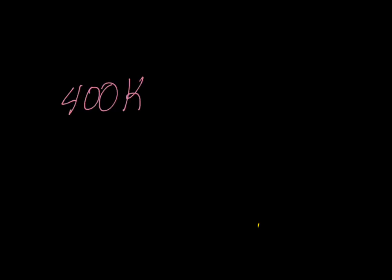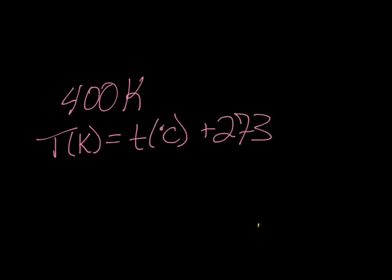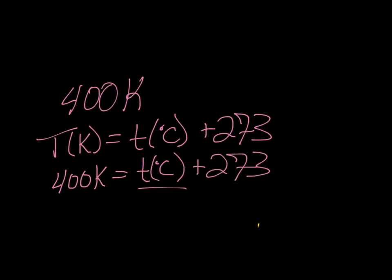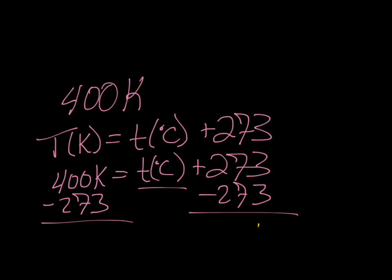The other way is if I gave you a temperature in Kelvin, like 400 Kelvin, and wanted to know what that equals in Celsius. We'd use the same formula: temperature in Kelvin equals temperature in Celsius plus 273, so 400 K equals temperature in Celsius plus 273. Subtracting 273 from both sides gives us 127 degrees Celsius. That's how you convert back and forth between Kelvin and Celsius — you need to know this formula.